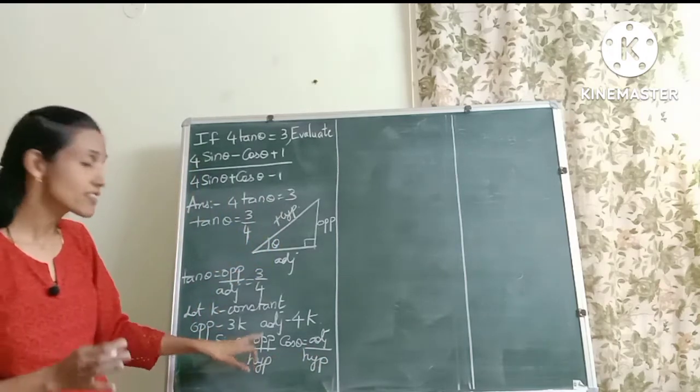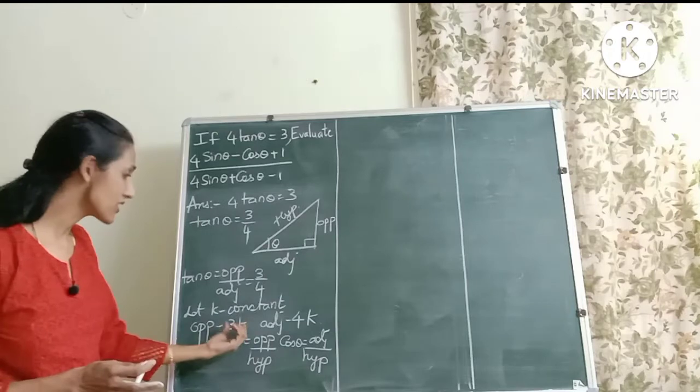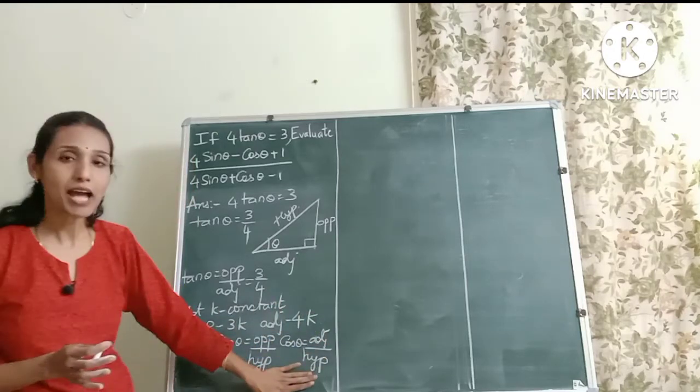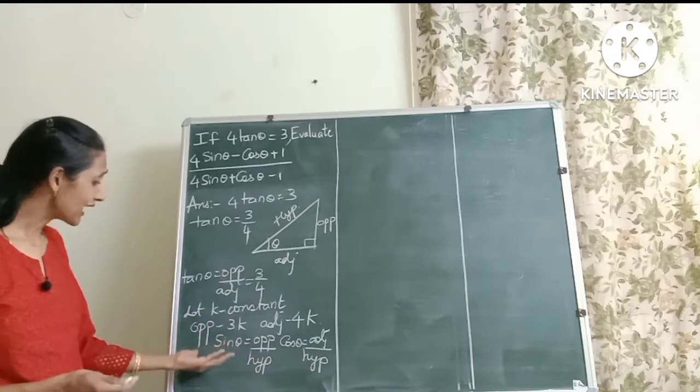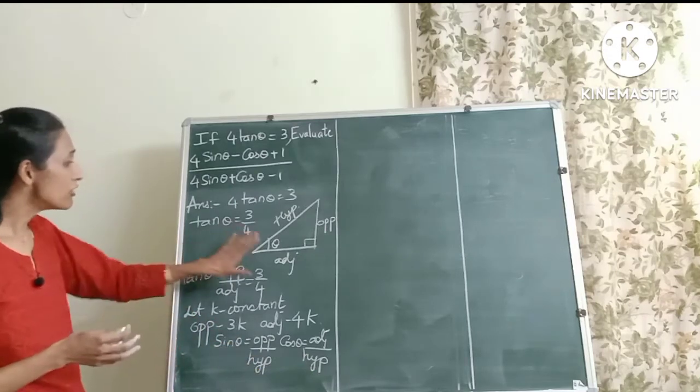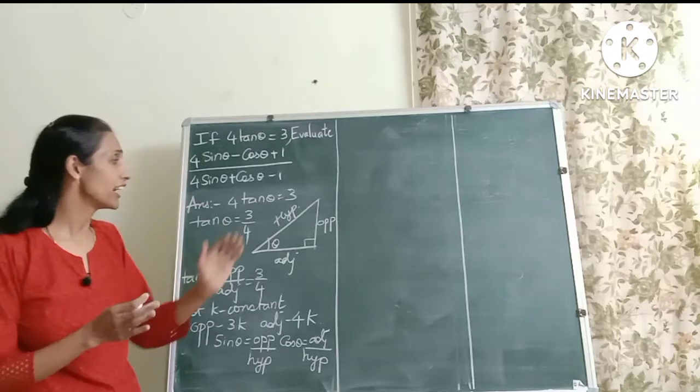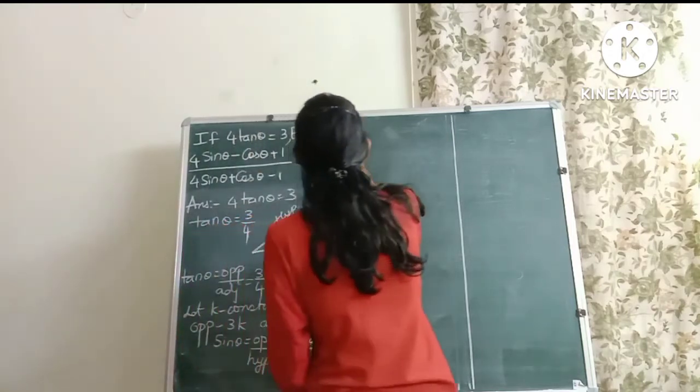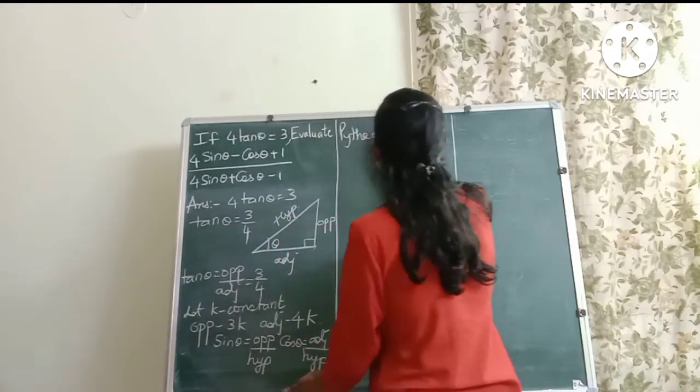So friends, did you see that we already know what is the opposite side? We know that opposite is 3k, adjacent is 4k. So if I somehow find the hypotenuse value also, I can easily find out sin θ and cos θ. So can you tell me which formula will help me to find out the hypotenuse? Yes, the Pythagorean theorem. So let's write it down. Can you recall what is the Pythagorean theorem?